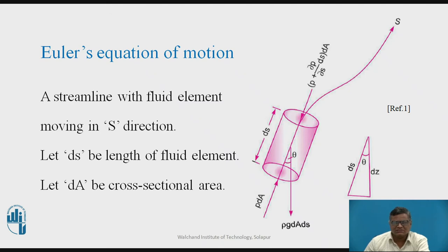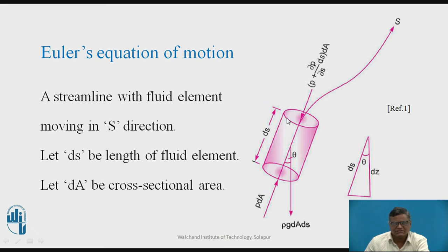Now, let us consider a fluid element moving along a streamline, shown here with this particular line, moving in the direction S. We consider one fluid element having length dS, and the cross-section area of that element is dA. So the element is cylindrical, with cross-section area dA and length dS.